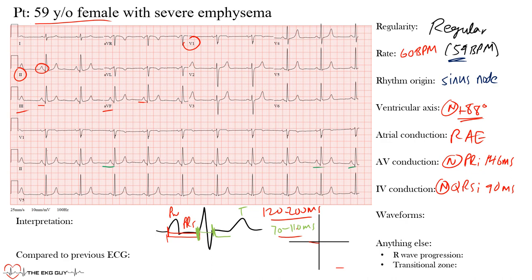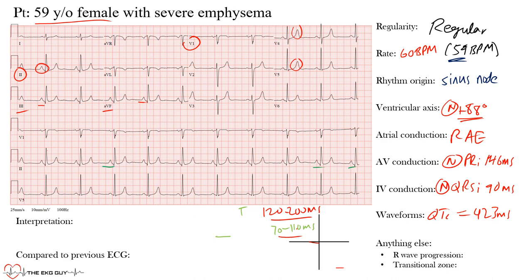Looking at waveforms: is there PR elevation or depression? No. ST segment elevation or depression? Not significantly here. Abnormal T-waves? They're slightly pointed but asymmetric, which is normal. This patient has no evidence of hyperkalemia, which can cause peaked T-waves especially in the anterior precordial leads. The corrected QT interval (QTc) was 423 ms, which is normal — in females, less than 460 ms is normal; in males, less than 440 ms.